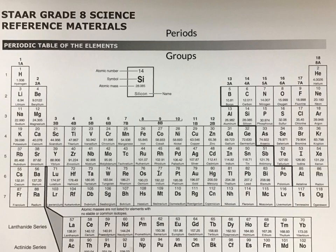Let's examine periods a little bit more closely. Period 1 starts with hydrogen and continues over to helium in group 18. Below it is period 2, with lithium and beryllium going over, then from boron over to neon at number 10. Period 3 is below period 2 and it goes from sodium over to argon, number 18.